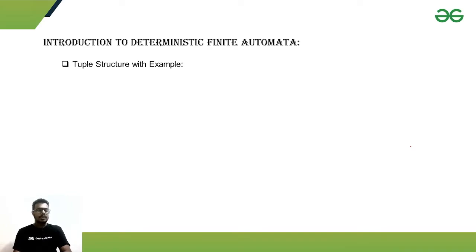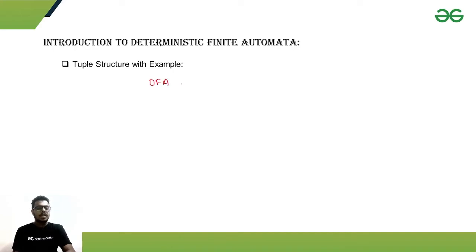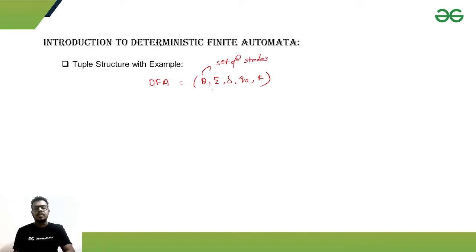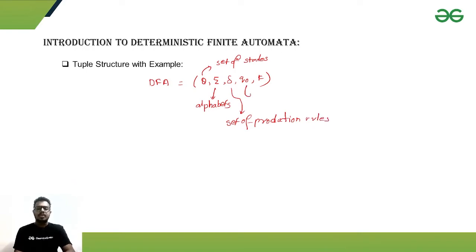We represent a DFA — Deterministic Finite Automata — using a five-tuple: Q, Sigma, Delta, q0, and F. Q is the set of states; Sigma is the alphabet; Delta represents the set of production rules or transition function; q0 is the starting state; and F is the set of final states.